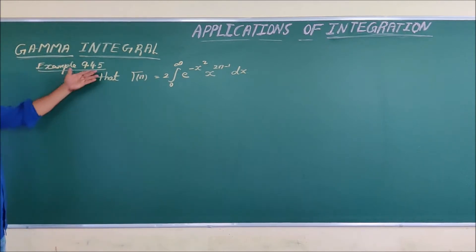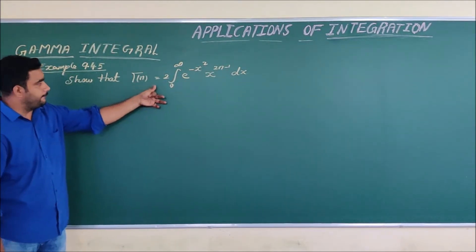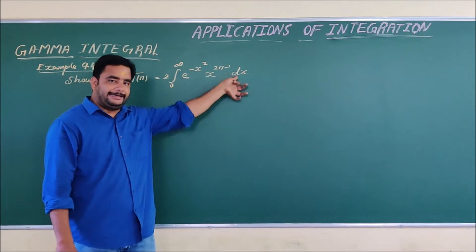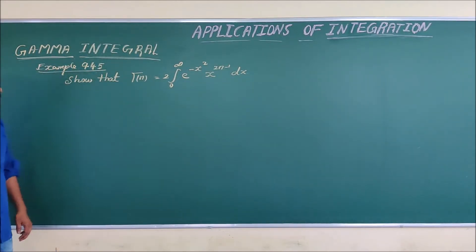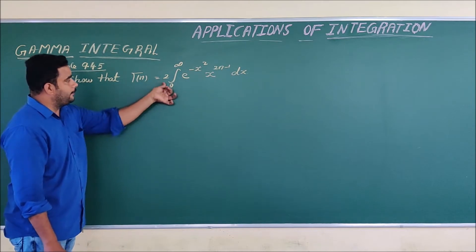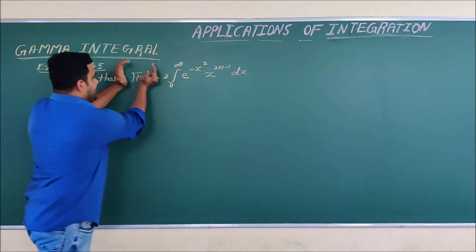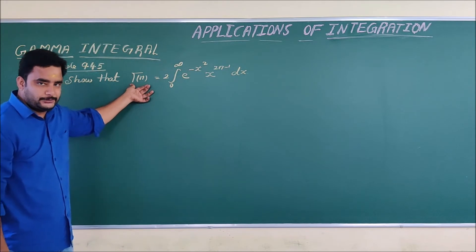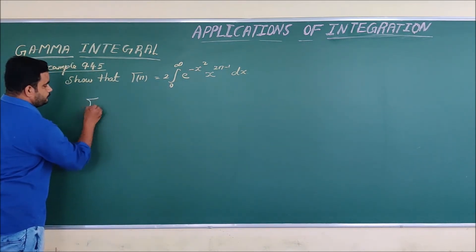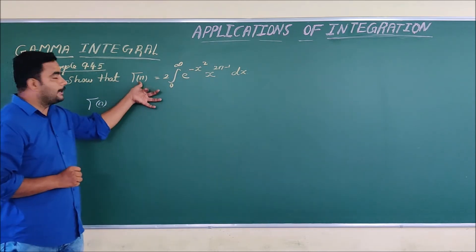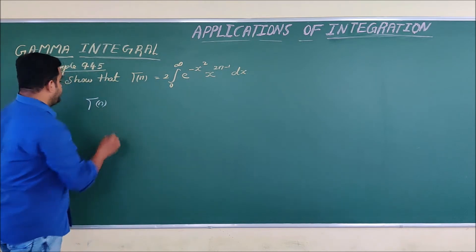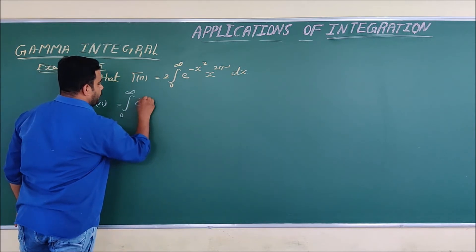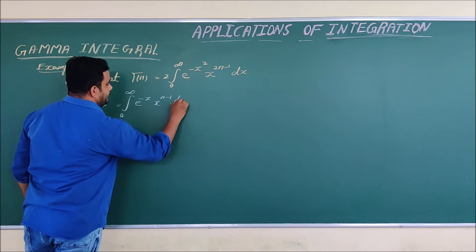The next problem is example 9.45, where gamma of n is equal to 2 times the integral from 0 to infinity of e to the power of minus x squared, times x to the power of 2n minus 1, dx. We have to prove this. First, we recall that this is a gamma integral: gamma of n is equal to the integral from 0 to infinity of e to the power of minus x, times x to the power of n minus 1, dx.